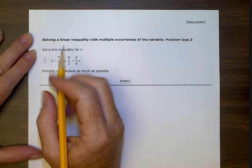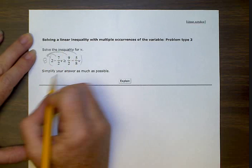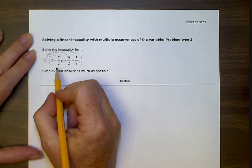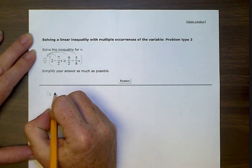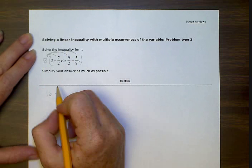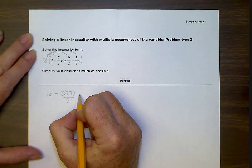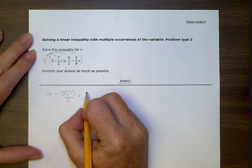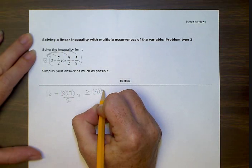So we're going to multiply 8 times 2, that gives us 16. 8 times negative 7, well let's do subtract 8 times 7 divided by 2v, greater than 9 times 8 over 2.